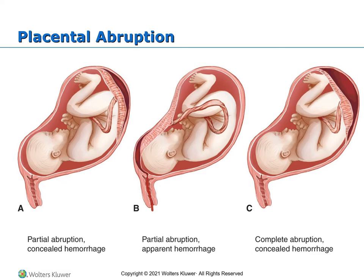Lab testing includes CBC, fibrinogen, PT, APTT, type and cross match, non-stress test, and biophysical profile. Ultrasound is not useful for definitive diagnosis because the clot cannot be seen in greater than 50% of cases; a CT is actually more reliable. Diagnosis is also confirmed after birth by visual inspection of the placenta. Initial assessment is much like for previa — you're going to see pain, uterine tenderness, contractions, increased fundal height, abnormal fetal heart rate pattern, elevated resting tone, and coagulopathy.